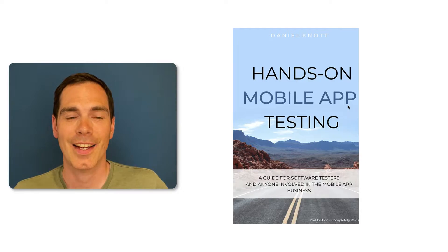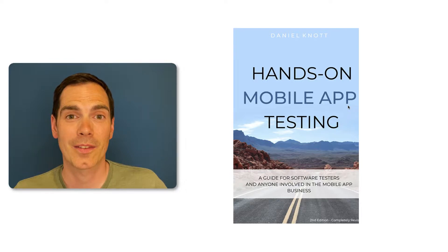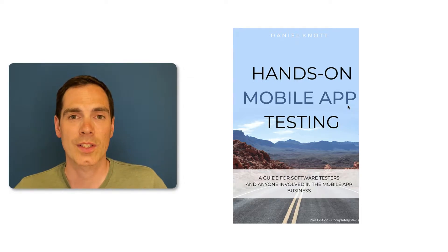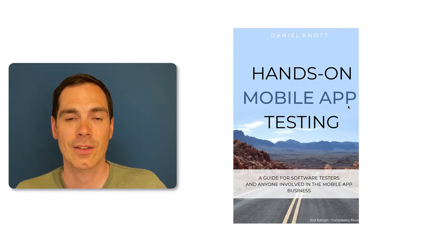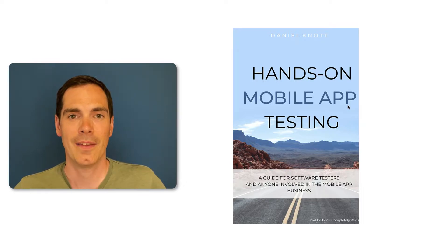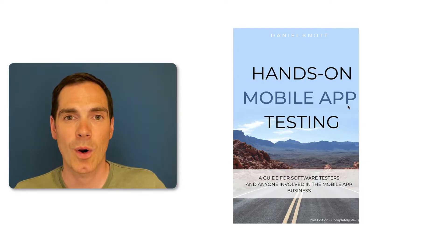And finally, as of today, you can get the book at LeanPub. So what is the book all about? You may ask yourself if you're already a reader of the first edition. The first edition was released in 2014 and it was eight years already on the market. Now after eight years, you can imagine the mobile world has changed again, and this book is completely reworked with so many different topics.